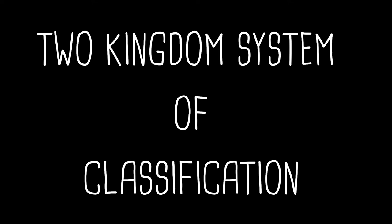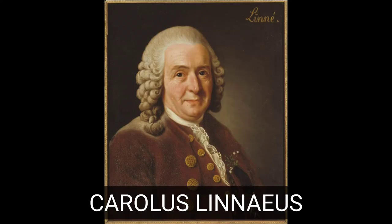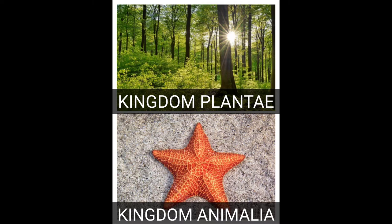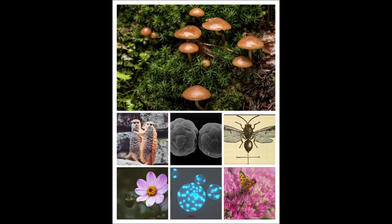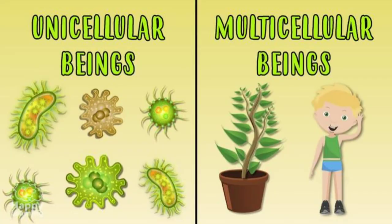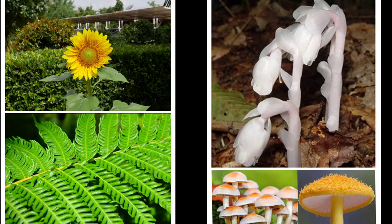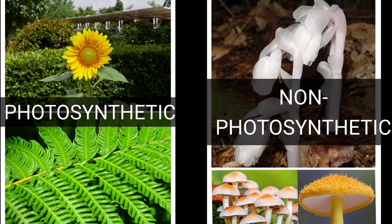Karl Linnaeus proposed the two kingdom system of classification. He classified all organisms into two kingdoms: Kingdom Plantae and Kingdom Animalia. Linnaeus is also known as the father of taxonomy, and made great contributions in the field of binomial nomenclature for naming plants and animals. However, as more organisms were identified, it was not always possible to make this distinction, as organisms did not fully share characteristics common to those kingdoms. Not being able to differentiate between unicellular and multicellular, or photosynthetic and non-photosynthetic, was a major drawback of this classification.